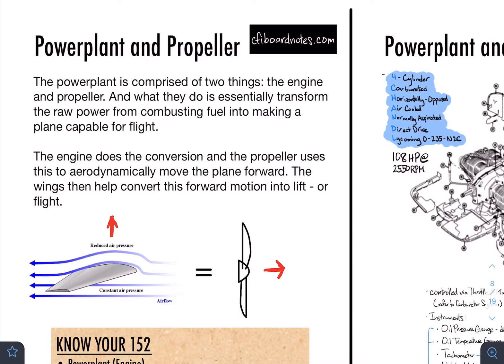Now, the problem is, when it comes to a plane, you can't just use an engine. It's not just tires that you have to move — you also have to use a propeller. And the way I explain how the propeller itself works is that it's almost like a sideways wing. You can see the other lessons about aerodynamics on the website, but essentially you have your relative wind, your AOA, all that stuff.